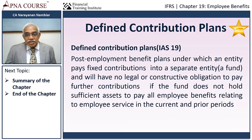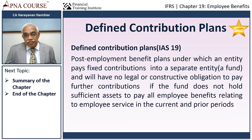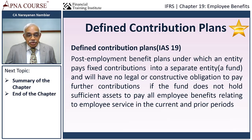The other type is where the company agrees to pay, say, 15 days' salary for every year of service. This is a defined benefit plan — the benefit the employee is going to get is defined. How much the company has to contribute is not known, because this will be based on the last drawn salary. This is where there are accounting issues.